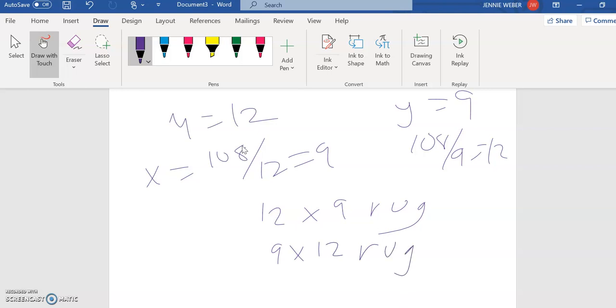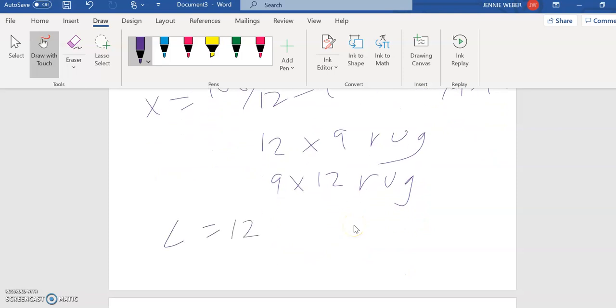Same thing. Usually, though, length is longer than width. So if I was going to write this out, I would say length is 12, width is 9. And that's just the common way we write stuff. Length is the long side, width is the short side. Obviously, these are the same rug. It depends on which way you turn it in your living room, right?